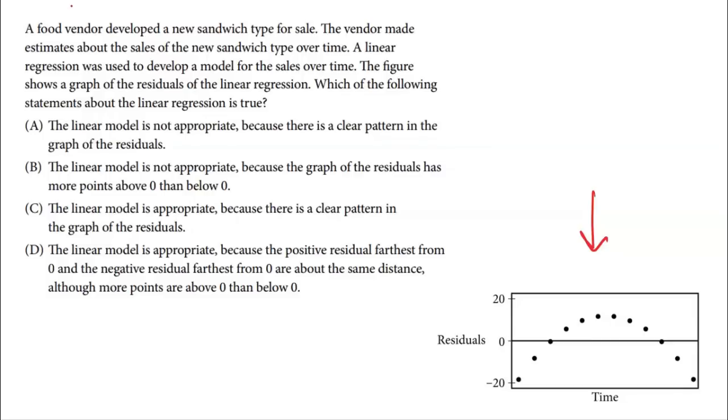So if I'm looking at this residual plot and I clearly see a pattern—it's obvious there is a pattern here, not scattered whatsoever—that is a sign my linear model is not appropriate. So I can immediately get rid of C and D because they said linear model is appropriate. What would be a good residual plot? Something with literally points scattered all over the place, no pattern whatsoever. That means your regression line is going through your data. We're obviously not going through our data well when we see a pattern in the residual plot. The first option says because there's a clear pattern in the graph of the residuals. Yes. When you see that clear pattern, that's a sign your linear model is not appropriate. The correct answer is A.